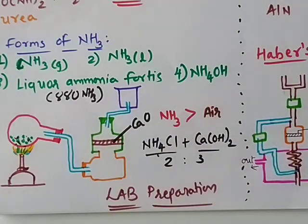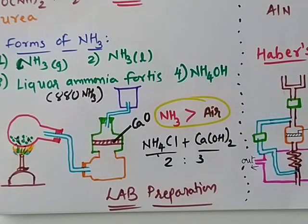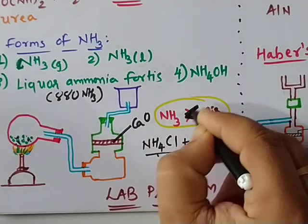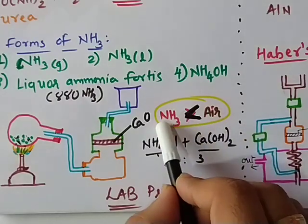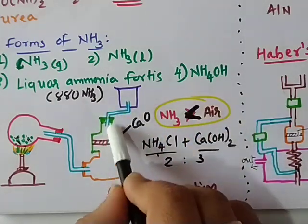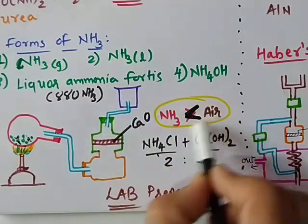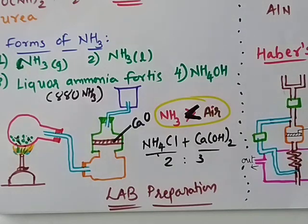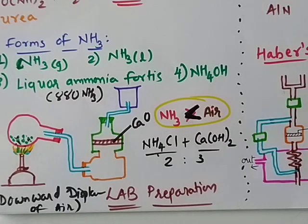For the collection method: ammonia is lighter than air. Since air is heavier it settles down, and ammonia is collected upward. This method is called downward displacement of air. So ammonia is collected by downward displacement of air — this is the collection method you must remember.